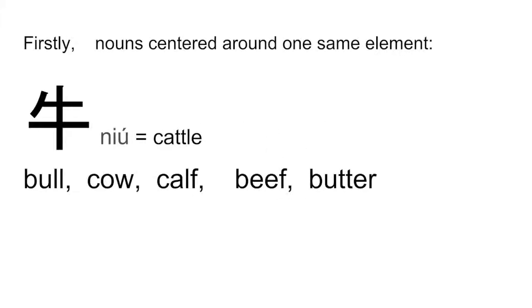Firstly, nouns are centered around one central element to form a relationship, to let you know that this group of words are all connected and related.